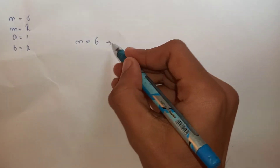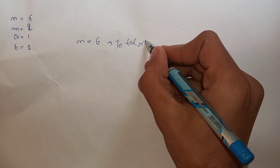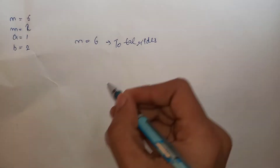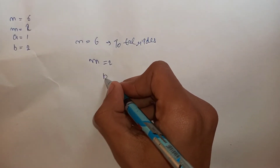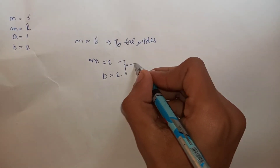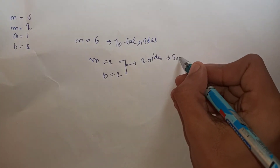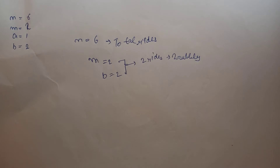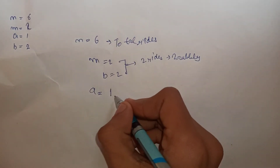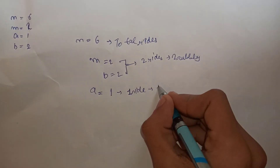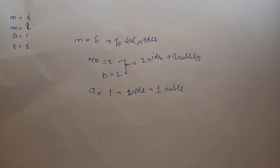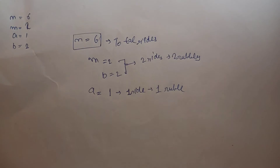Let's take a sample test case where N=6, meaning we have to do 6 rides total. We are given M=2 and B=2, so for 2 rides we spend 2 rubbles. We are also given A=1, so for one ride we spend 1 rubble. We need to find the minimum rubbles to spend for N rides.